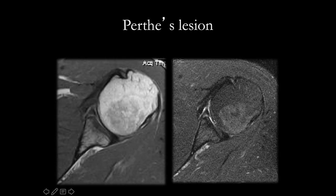If the labrum is torn but the periosteum is still intact, it is a Perthes lesion. As we can see here, the anterior inferior labrum is torn but the periosteum is clearly intact. Our surgeon says that all this differentiation of the different types of tears doesn't matter much to him. His main questions are: is the labrum intact or not? If it is torn, what is the quality of this labrum — is it good, or due to chronic recurrent dislocation, is it worn off and degenerated? The other question he is interested in is glenoid bone loss, which we will come to later.